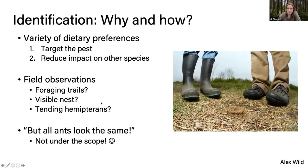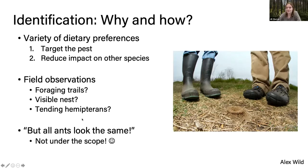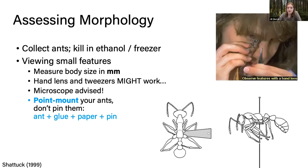First, if you are in the field, make sure you take some basic observations. Do they form foraging trails? Do they have a visible nest? Are they tending hemipterans? Then the question is how do you identify them? Not all ants look the same under a microscope. A lot of ants are little and brown, but a microscope is going to be your friend.